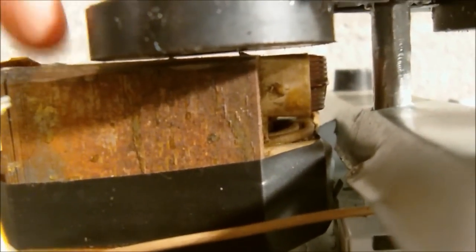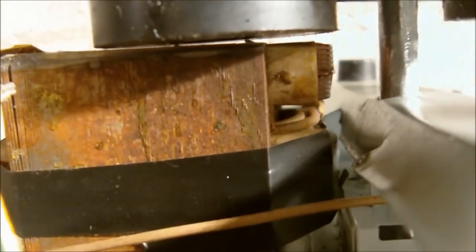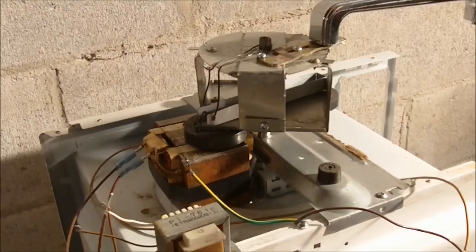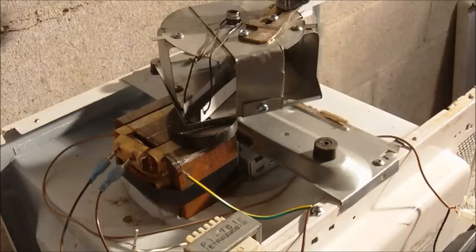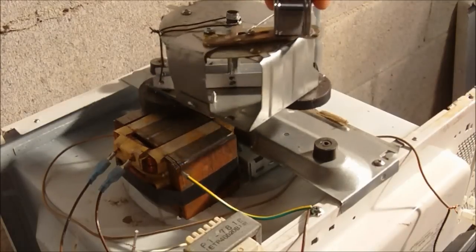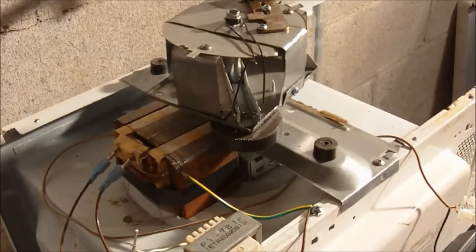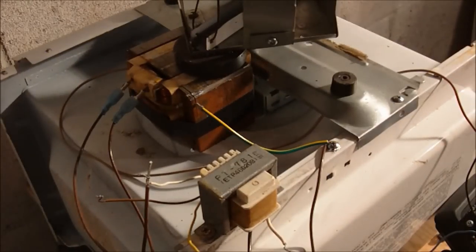What I have here is a single pole generator using only two permanent magnets from inside the microwave. When you rotate this, the magnet passes over the core of the transformer. I'm using the secondary coil because we're going to get a lot higher voltage out of the secondary coil.